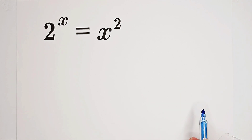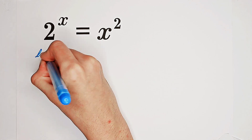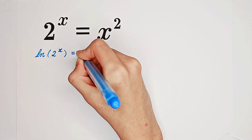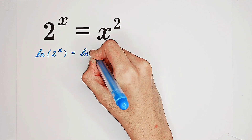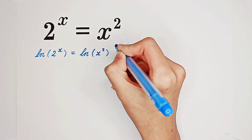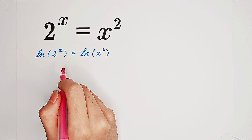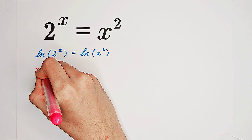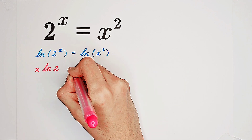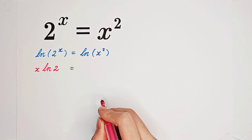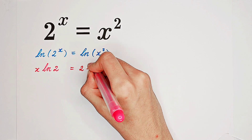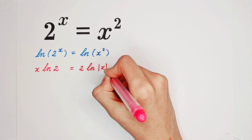What shall we do firstly? You see, we have exponential form. What we can do is take a natural log on both sides. So the natural log of 2 to the power of x equals the natural log of x squared. We can use the formula: the natural log of a to the power of b equals b times the natural log of a. So it is x times the natural log of 2 equals — now pay attention — the natural log of x squared is 2 times the natural log of the absolute value of x.